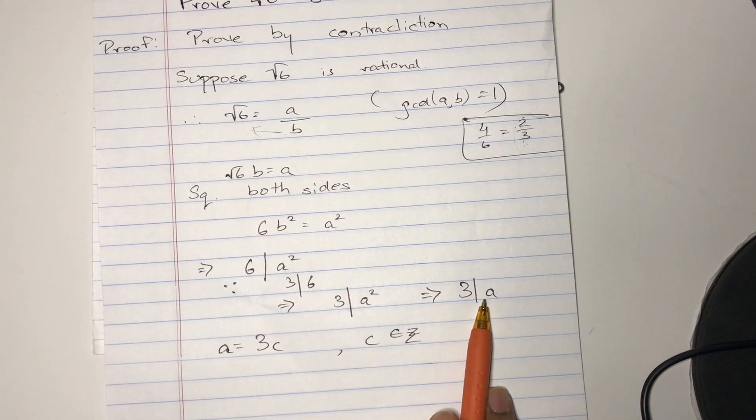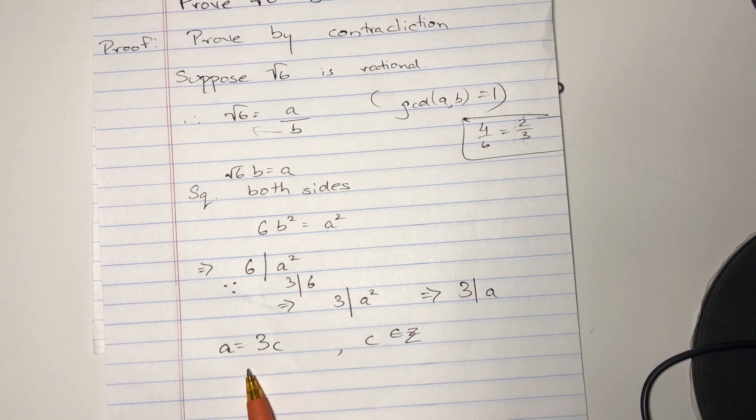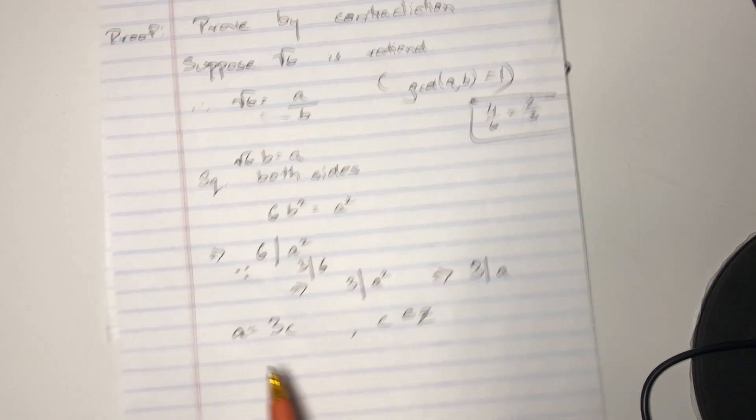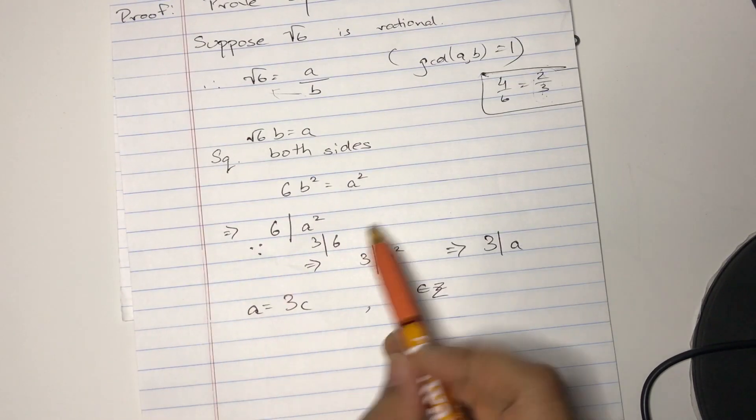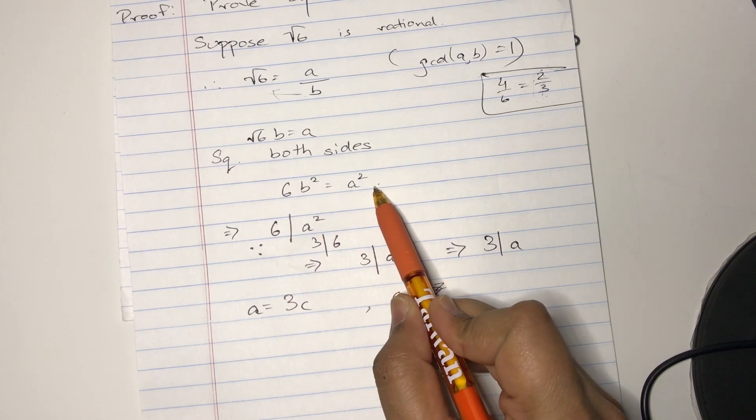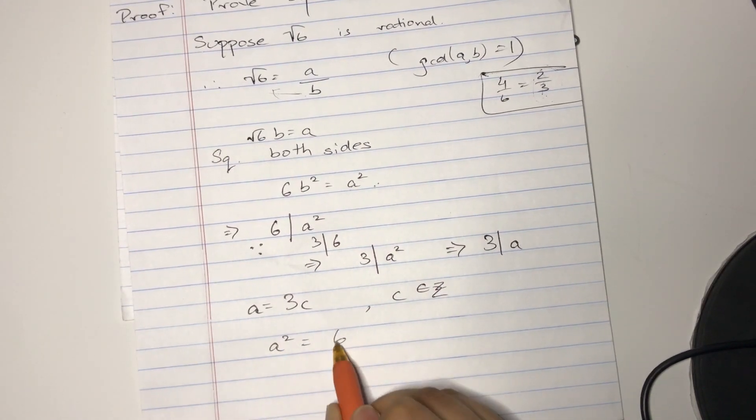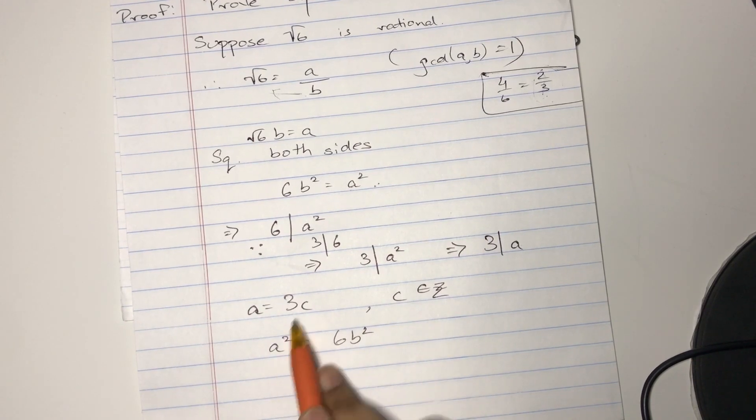So this means this, basically. Okay, so remember we had this equation. I'm just going to rewrite it in a different way. Well, A² equals 6B², and A equals 3C.